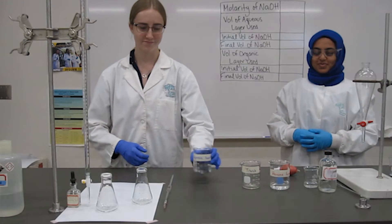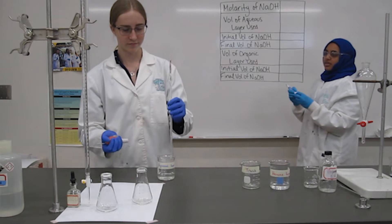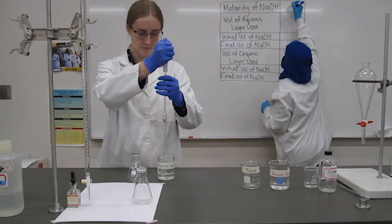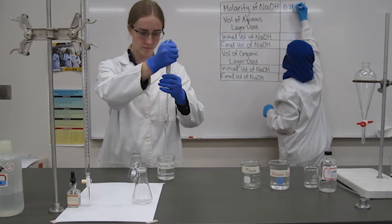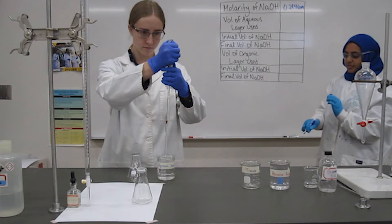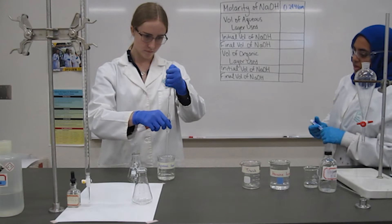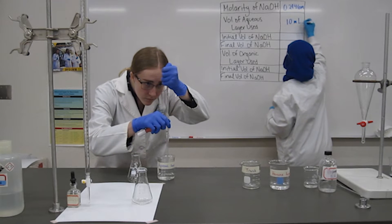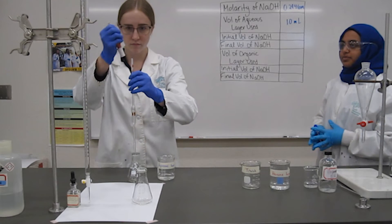Next, we're going to test the aqueous layer by doing a titration with sodium hydroxide. Because it's propanoic acid, we can use a standard acid-base titration. We want to obtain exactly 10 milliliters of this aqueous layer, so a volumetric pipette will be used. Make sure to record the molarity of the sodium hydroxide that you are given. Using the same technique as before, fill the pipette past the line, roll your thumb off until it's at the line, and place your 10 milliliters in your Erlenmeyer flask.